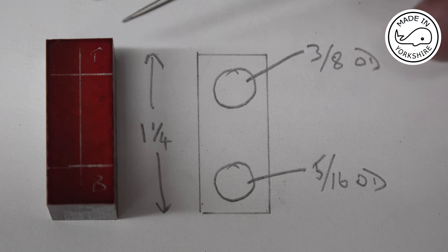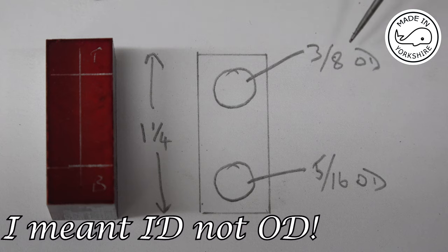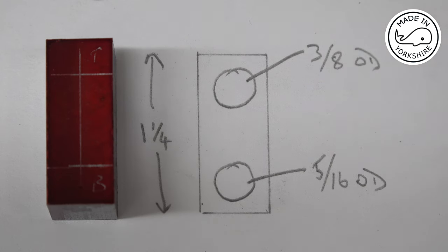They're cut to length and I've marked them up. The top position needs to be drilled and reamed to 3 eighths of an inch and the bottom one to 5 sixteenths of an inch, and I'll do that on the mill.